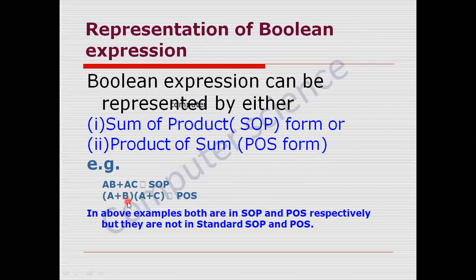Here I give two examples. AB plus AC is in SOP form — SOP is nothing but sum of product form. The second one is (A plus B) into (A plus C), which is POS form — product of sum form. In SOP form, literals are ANDed together within each term and the terms are ORed together. In POS form, literals are ORed together within each term and the terms are ANDed together.